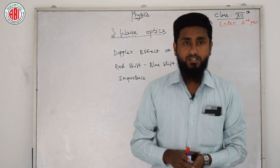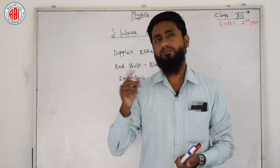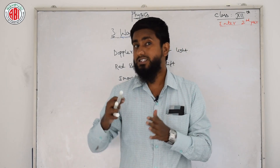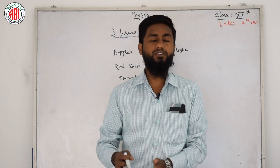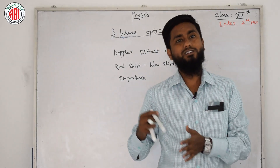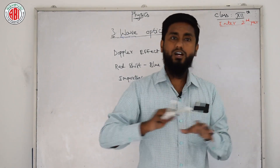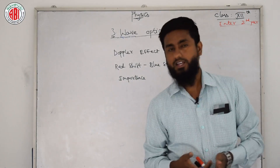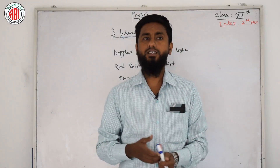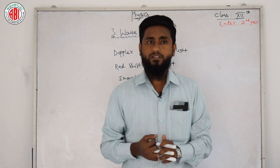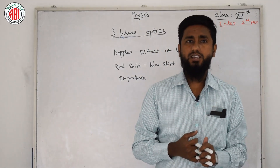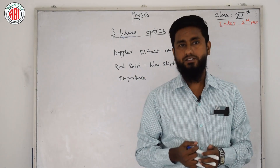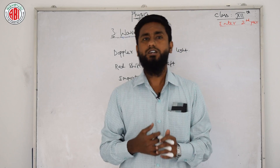Coming to the Doppler effect of light — in chapter number one on waves, we learned about the Doppler effect related to sound. Now in this lesson we will learn the Doppler effect related to light. The definitions are similar, but we have a few changes in formulas and derivation. The apparent change in the frequency and wavelength of light when there is a relative motion between the source and observer is referred to as the Doppler effect in light.